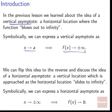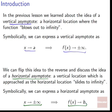We can flip this idea to the reverse and discuss the idea of a horizontal asymptote — a vertical location which is approached as the horizontal location slides to infinity. As our x becomes very, very large, what vertical height do we go to? Symbolically, we express it as x goes to positive or negative infinity, and f of x goes to some specific height y equals b.